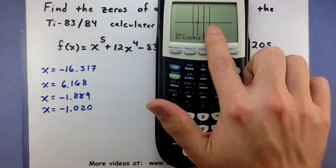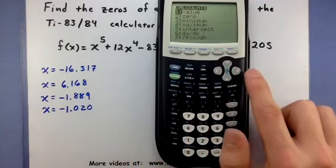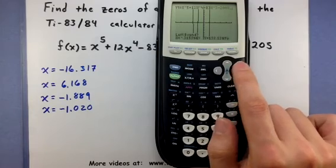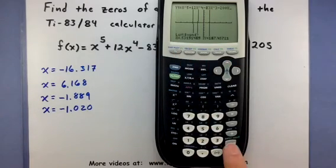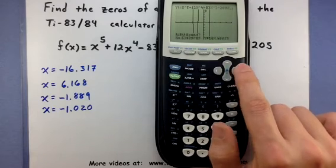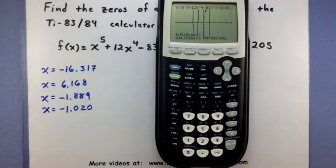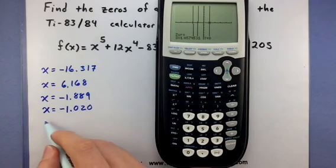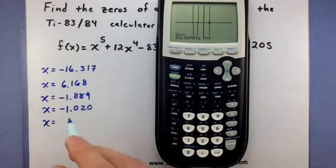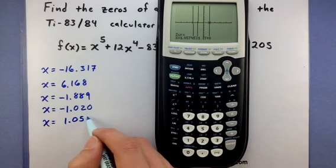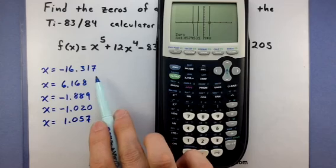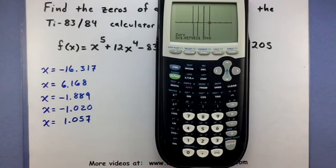Just one more to go. Let's find this other one that looks like it's around one by going second, calc. Select our zero option. And picking some place on the left side of one, so about a half. Then we'll move it to somewhere on the right side of one, so 1.7 sounds okay. And make a guess somewhere around one. Enter one last time. And this last zero looks like it's located at 1.057. So I have a fifth degree polynomial and I found one, two, three, four, five zeros, so I actually know I'm done.